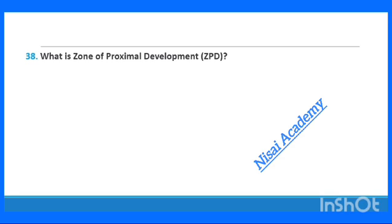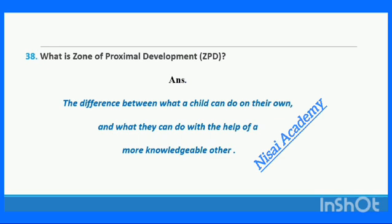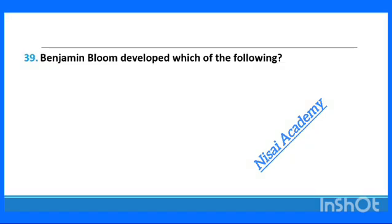Question 38: What is the zone of proximal development? The zone of proximal development is the difference between what a child can do on their own and what they can do with the help of a more knowledgeable other.